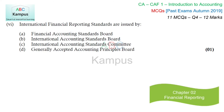Sixth question: International Financial Reporting Standards are issued by which body? The Financial Accounting Standards Board is the USA standard board — not correct. The International Accounting Standards Board (IASB) is the correct answer. The International Accounting Standards Committee is the old name of the same board. A 'Generally Accepted Accounting Principles Board' does not exist.